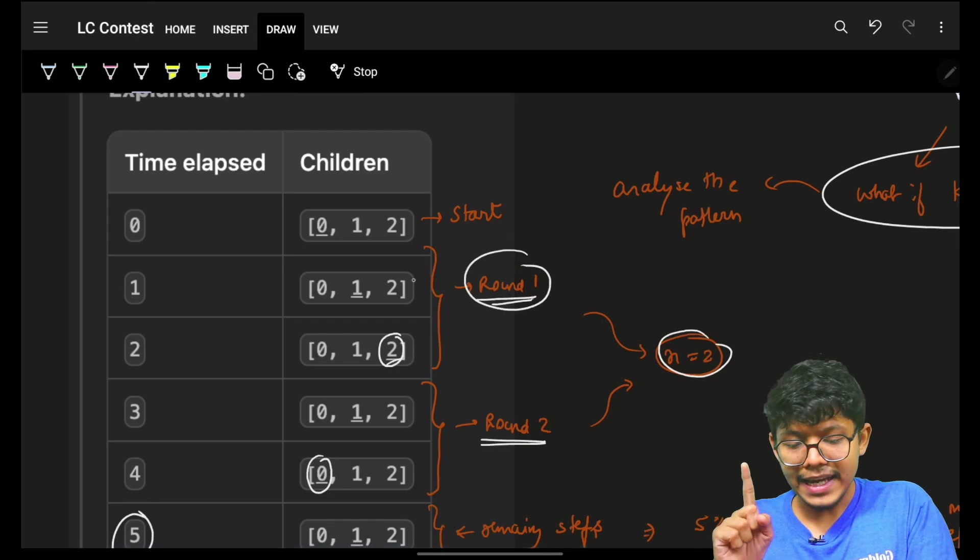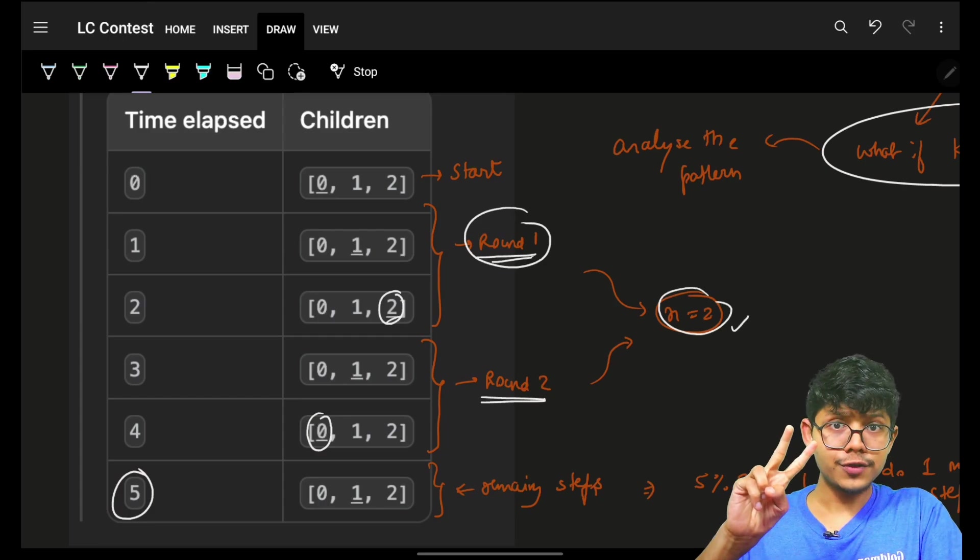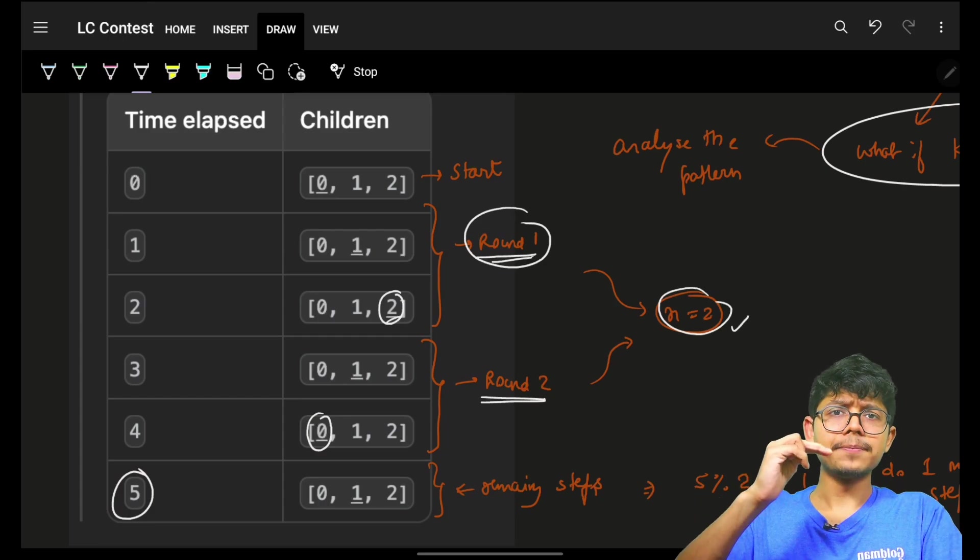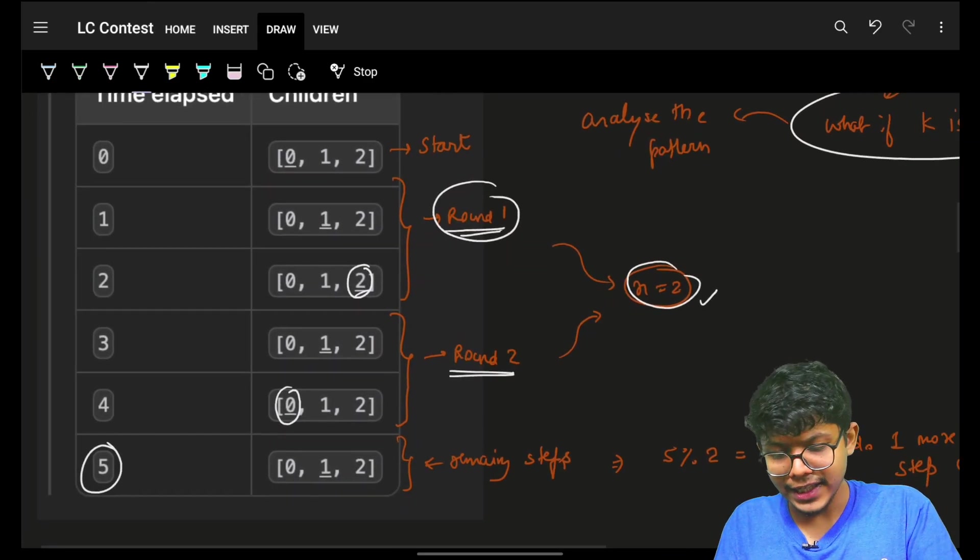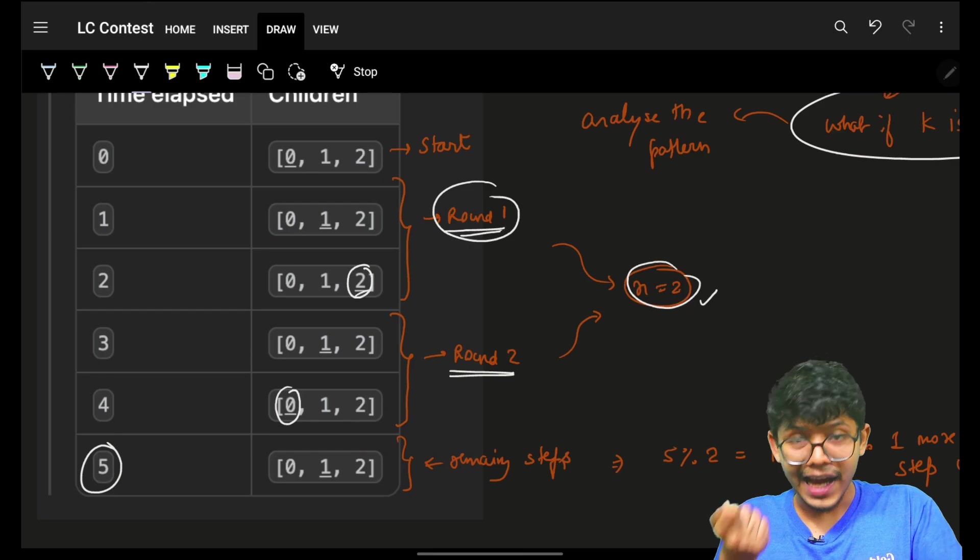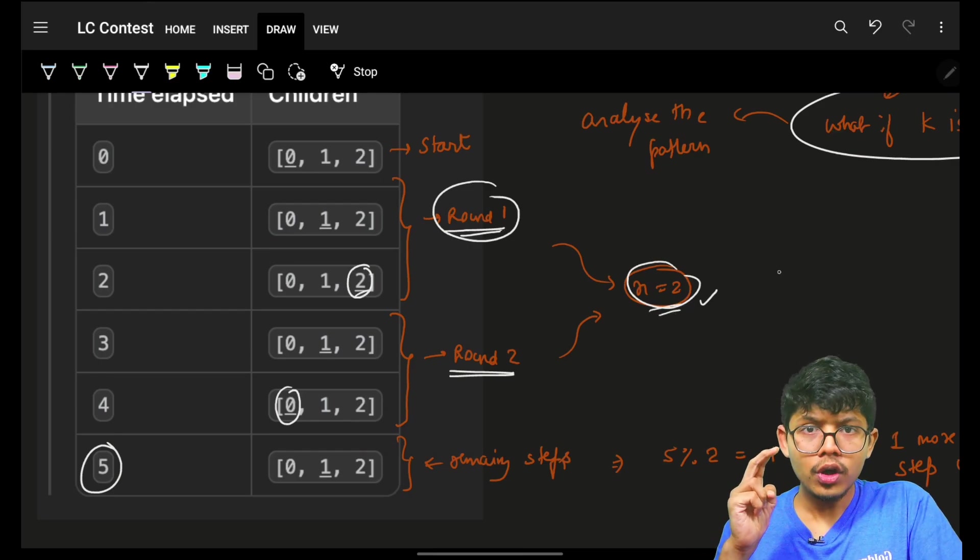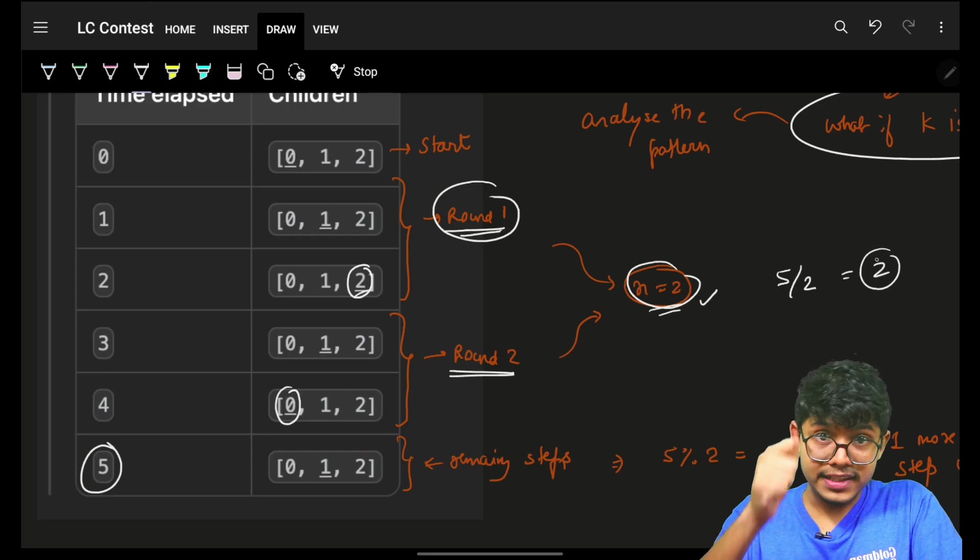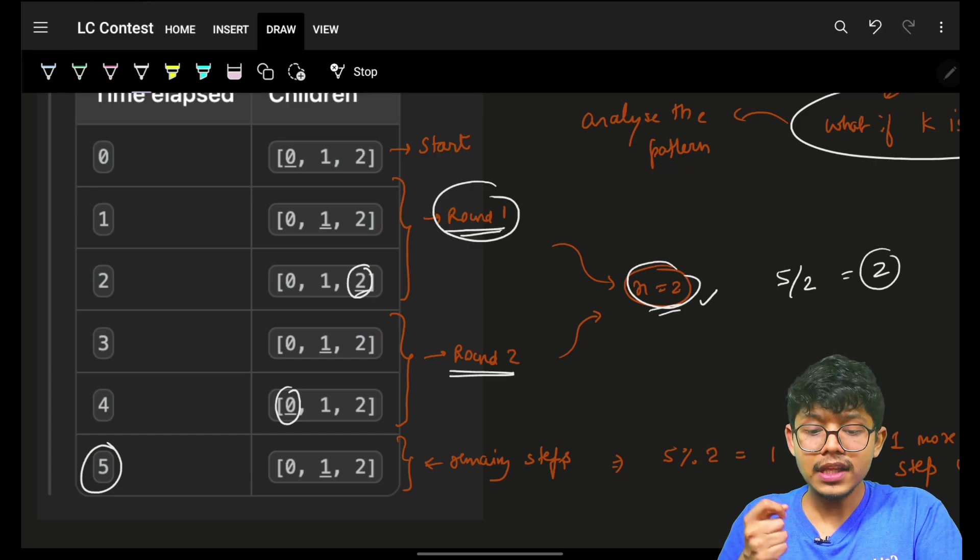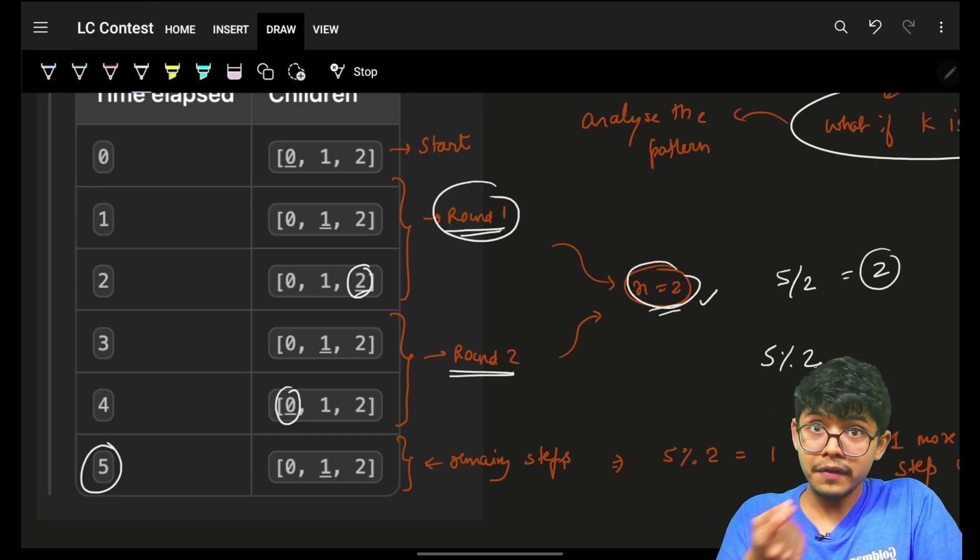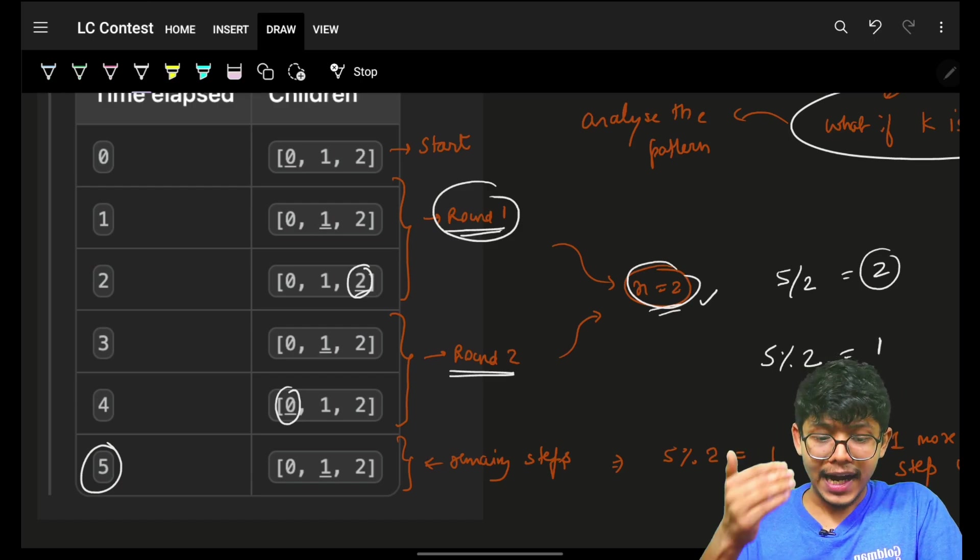Okay. So, if I have 2 iterations for rounds, firstly, let's see how many rounds are entirely completed. How I will know that? Simply, I know I have 5 seconds. I know each round will take 2 seconds. So, 5 by 2 gives me 2. It says that 2 rounds are completed. Then, still, I will be remaining with how many seconds? 5 mod 2 will give me how many seconds are still remaining. It gives me 1. So, it tells me that 2 rounds are completed.